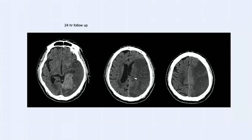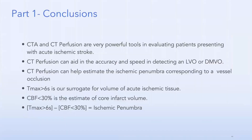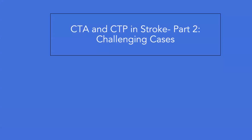CT conclusion for Part 1: CT and CT perfusion are very powerful tools in evaluating patients with acute ischemic stroke. CT perfusion can aid in the accuracy and speed of detecting LVOs or distal medium vessel occlusions, and help estimate the ischemic penumbra. Tmax >6 seconds is our surrogate for acute ischemic tissue volume; CBF <30% is our core infarct volume; subtract those for your ischemic penumbra.